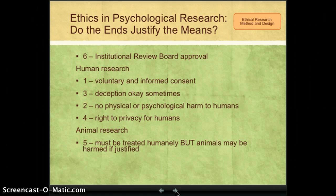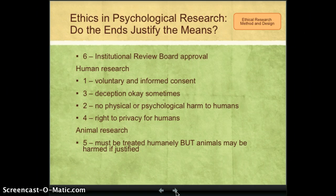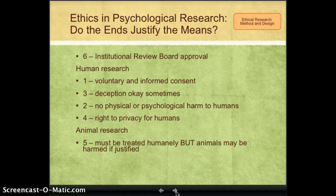If the research is with animals, there is just one guideline — guideline five. This states that animals must be treated humanely, meaning they must be kept in clean pens with the proper amount of space, food, and similar necessities. What makes animal research different from human research is the second part of this principle: animals may be harmed if the knowledge to be gained is thoroughly justified. So while a researcher cannot permanently harm a person, they can permanently harm — including kill — an animal in research if what would be found out is of great enough value.